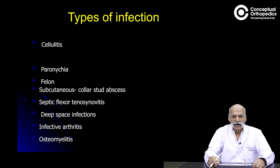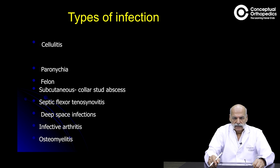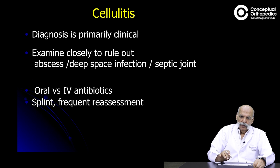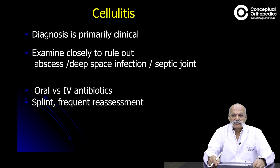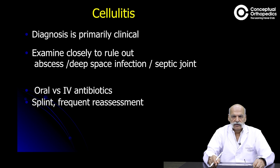The types of infection we are going to cover today are: cellulitis, paronychia, felon, subcutaneous collar stud abscess, septic flexor tenosynovitis, deep palmar space infections, infective arthritis, and osteomyelitis. As far as cellulitis is concerned, the diagnosis is primarily clinical. My advice is to examine the hand closely to rule out any subcutaneous or deep space abscess, and do not forget to examine the joints for the possibility of infective arthritis.